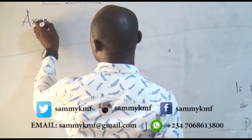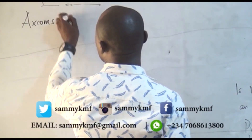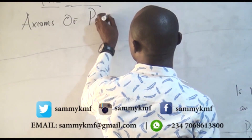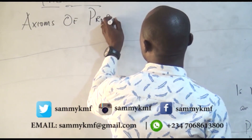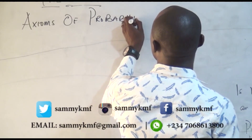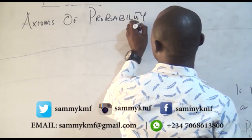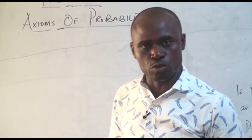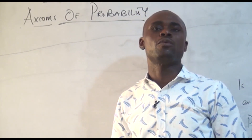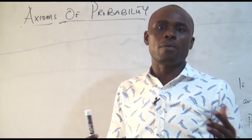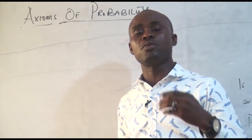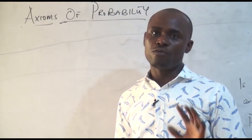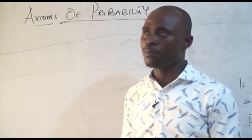We go to the axioms of probability. The axioms of probability are those rules that we must take note of whenever we are dealing with probability problems. Anytime we are dealing with a probability problem, you must take note of those rules. They are very important.